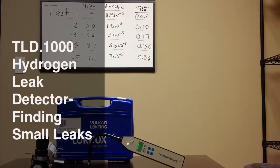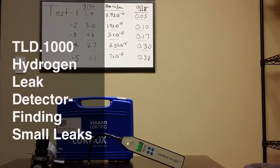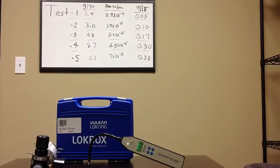This video is going to show the capabilities of the Vulcan Lockring TLD-1000 hydrogen leak detector. This unit is capable of detecting hydrogen as a tracer gas.